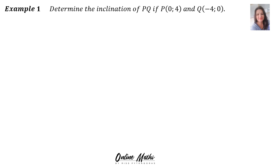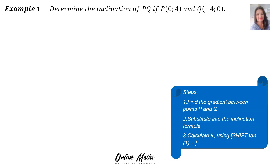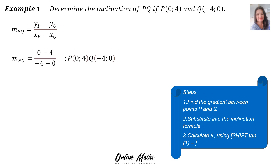Example 1. Determine the inclination of PQ if P's coordinates are (0, 4) and Q's coordinates are (-4, 0). The first thing you do is work out the gradient between points P and Q with your gradient formula. When you substitute — all the y's on top: 0 minus 4, and all the x's at the bottom: negative 4 minus 0 — you end with the gradient of PQ equal to positive 1.